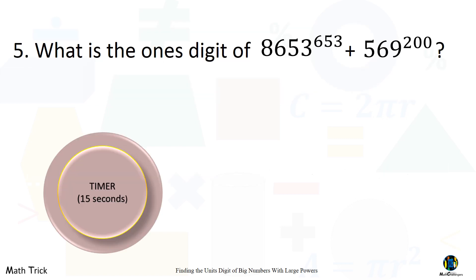Practice problem (5): What is the unit's digit of 8,653 to the 653rd power plus 569 to the 200th power?